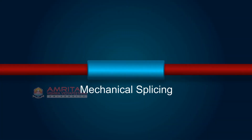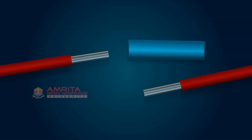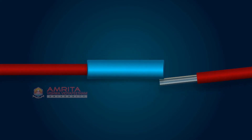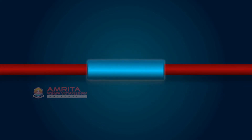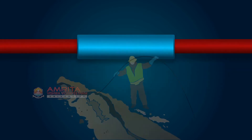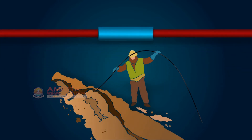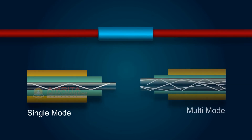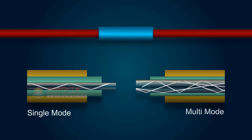Mechanical splicing: mechanical splices are alignment fixtures that hold the ends of two fibers together with some index matching gel or glue between them. Many mechanical splices are used for restoration and they can work well with both single mode and multi-mode fiber.